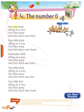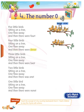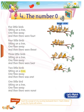Five little birds sitting on a tree, one flew away and then there were four. Four little birds sitting on a tree, one flew away and then there were three. Three little birds sitting on a tree, one flew away and then there were two. Two little birds sitting on a tree, one flew away and then there was one. One little bird sitting on a tree, one flew away and then there were none.